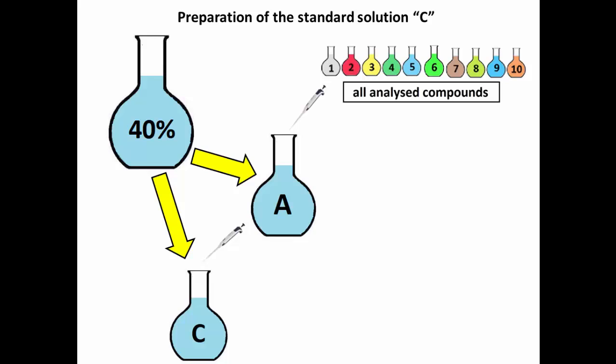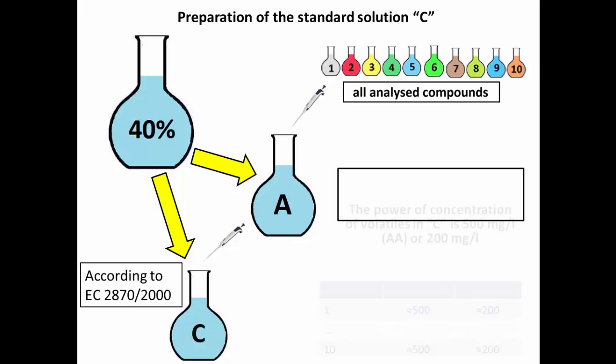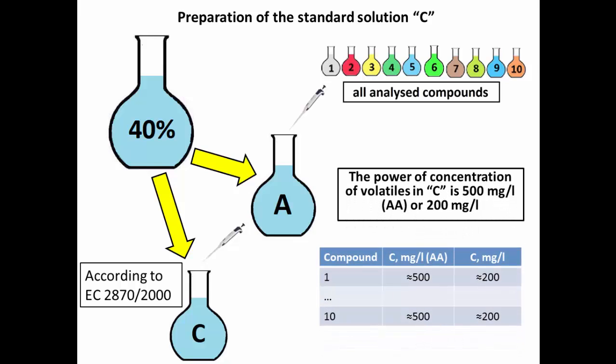The quantitative content of prepared solution is familiar to solution C according to Commission Regulation 2870-2000. Since all mentioned operations are made in a gravimetric way, the concentrations of volatiles can be calculated in mg per litre or mg per litre of absolute alcohol dimensions. For example, the concentration of volatiles in solution C is close to 500 mg per litre of absolute alcohol or 200 mg per litre.